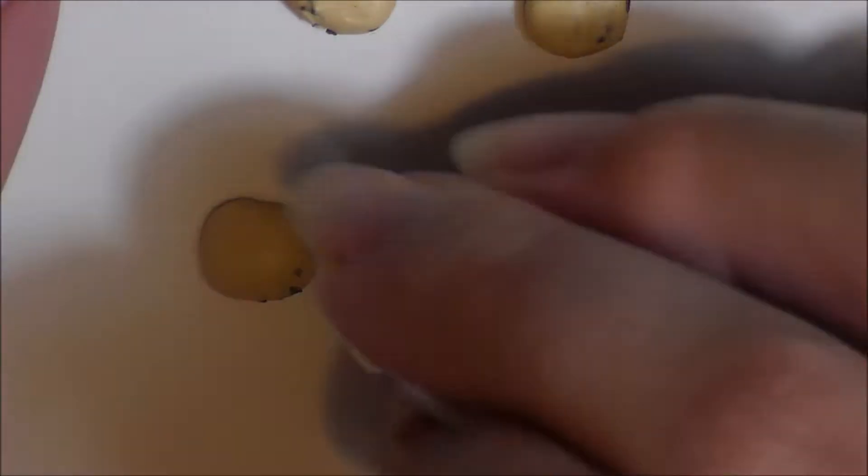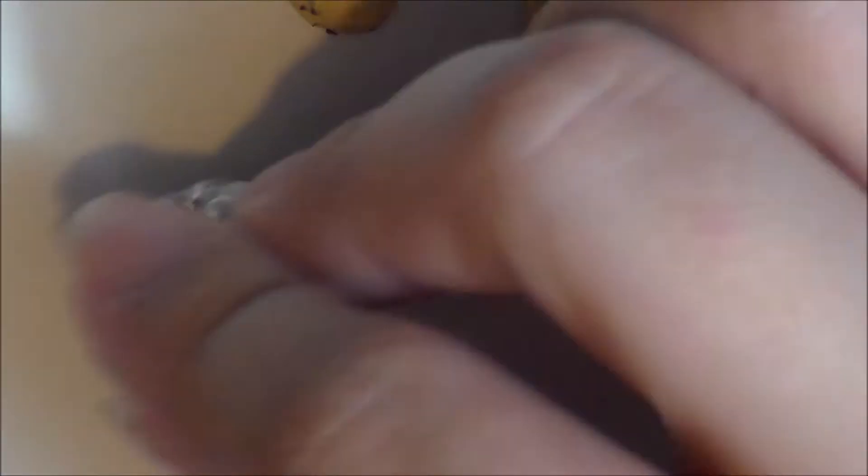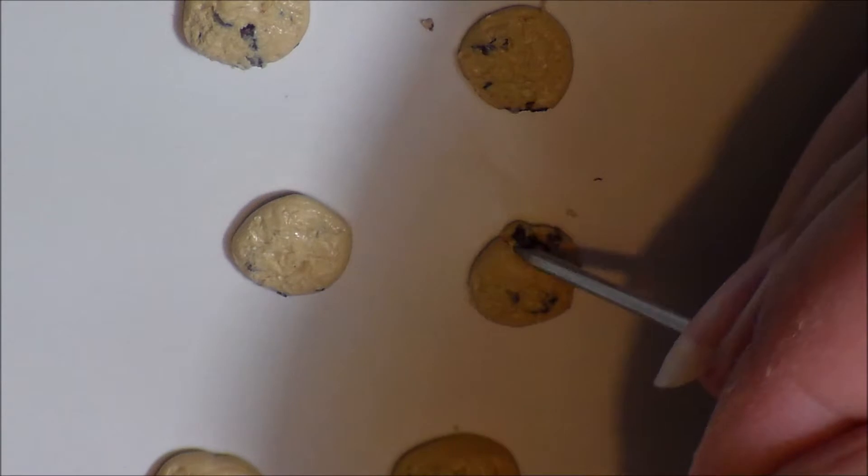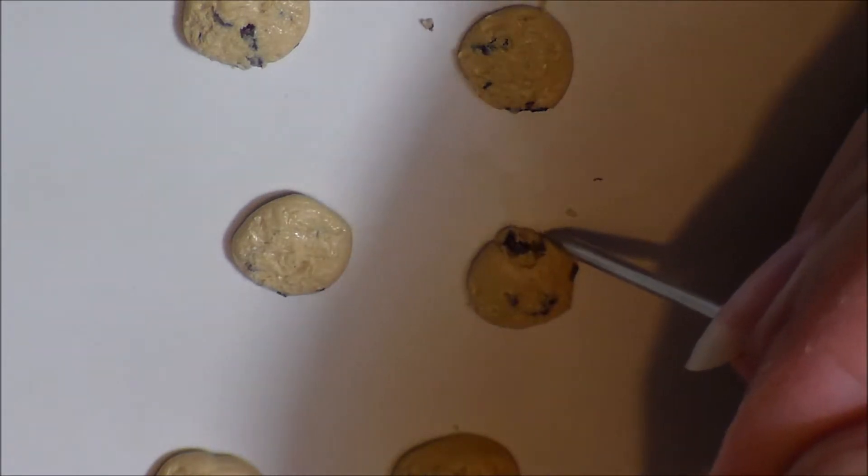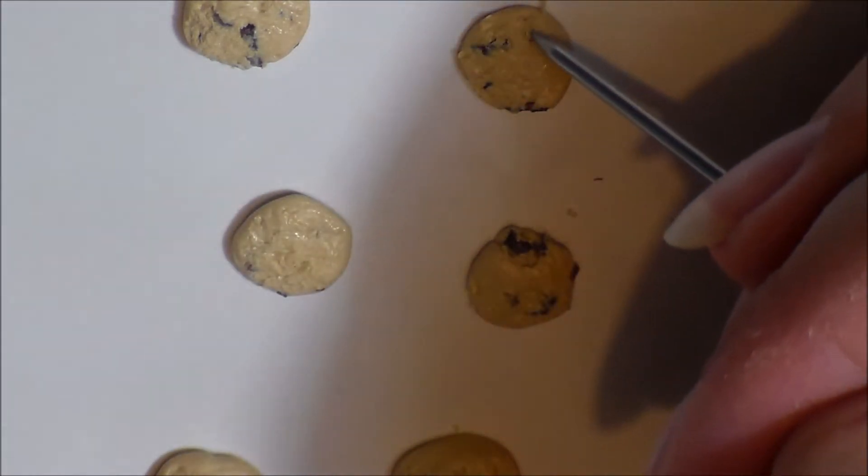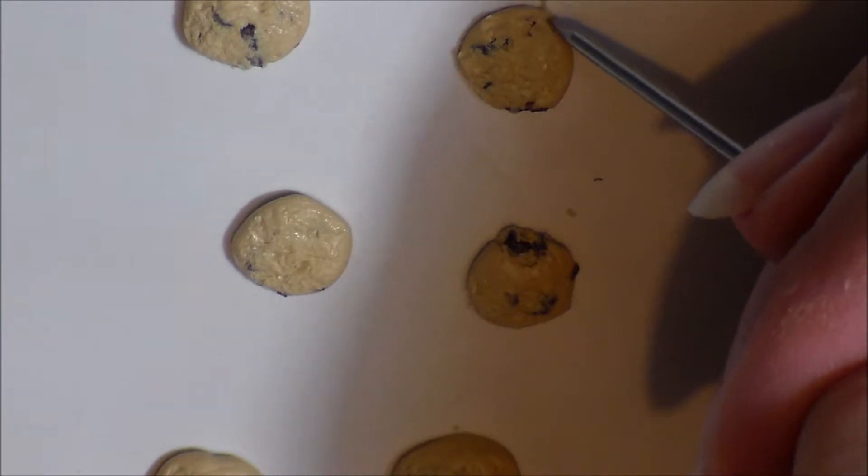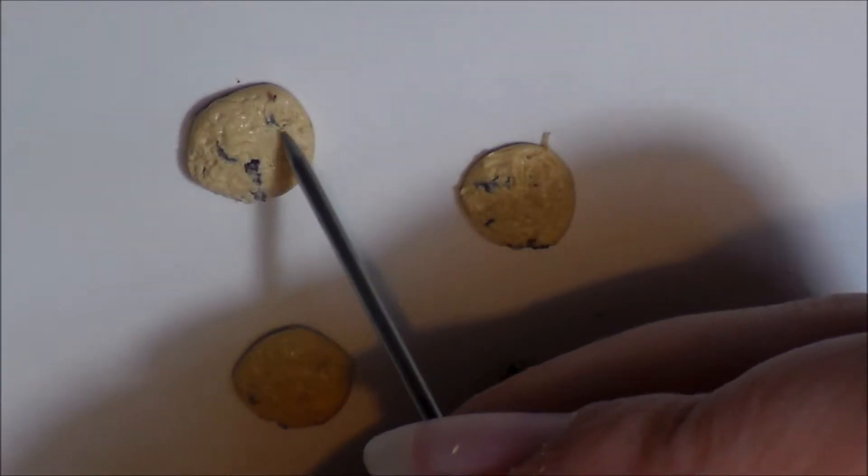Then begin to add texture using aluminum foil. You can add more texture using your needle tool by creating cracks in the cookies as well as uncovering some of the chocolate chips that may be a little more hidden than you might like.